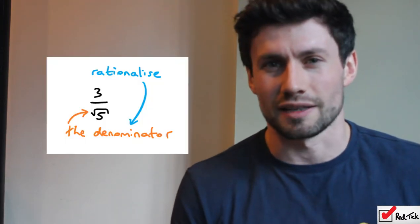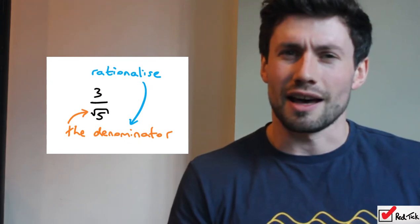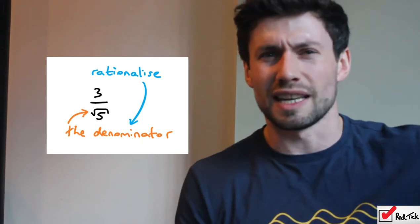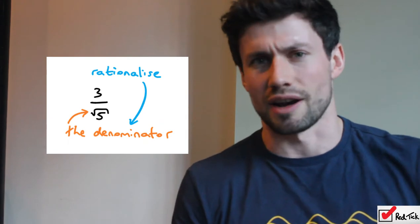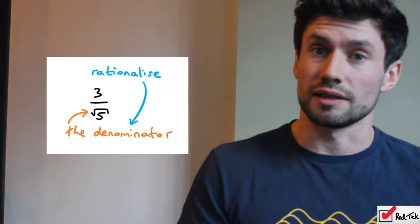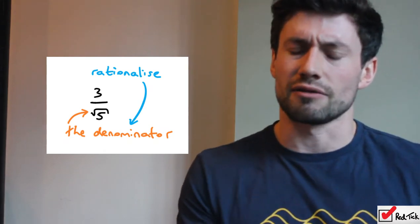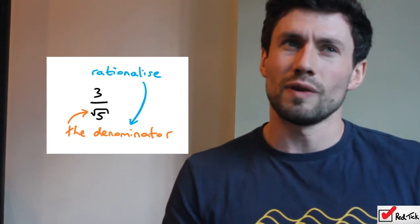Mathematicians are not as bad at naming things as people give them credit for. They have actually named things by terms that make sense. The perfect example is rationalizing the denominator. When I was at school I heard 'rationalize the denominator' and it just didn't mean anything to me — I knew it was a topic and I had to go through a process. But think about it: the words make sense. The denominator is the bottom of the fraction, and to rationalize means to make rational. So it would be useful to understand what the word rational means in terms of numbers.